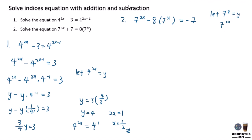So y^2 - 8y = -7. This is a quadratic equation. Bring everything to one side: y^2 - 8y + 7 = 0. Now factorize the quadratic equation.